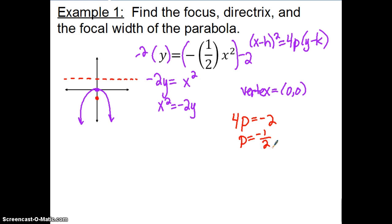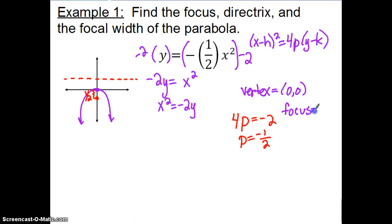The focal length is −½, meaning the focus is ½ of a unit below the vertex. The negative sign tells us it is ½ below — that sign is important when dealing with parabolas opening left or right where we're less familiar with the graphs. Since the vertex is at (0, 0) and the focus is ½ below, the coordinates of the focus are (0, −½).